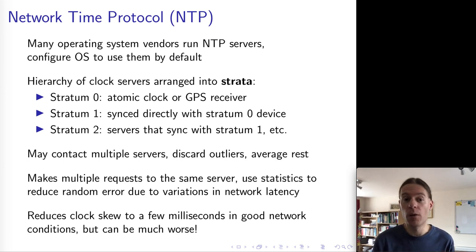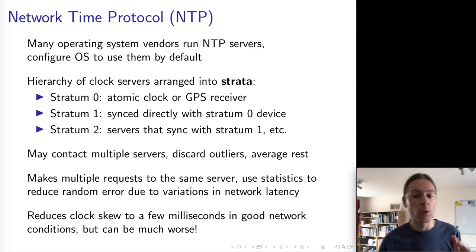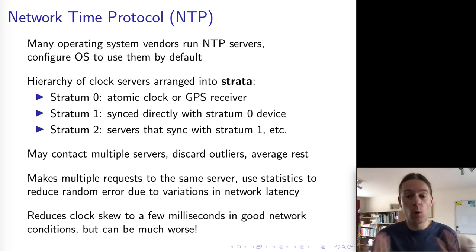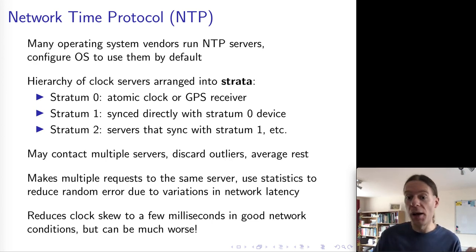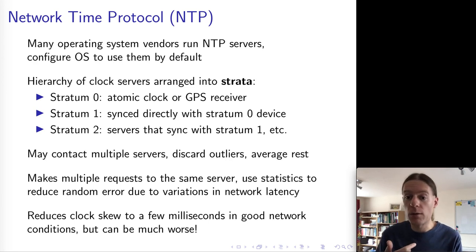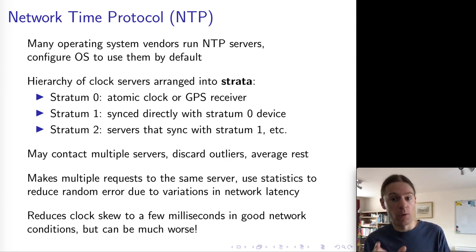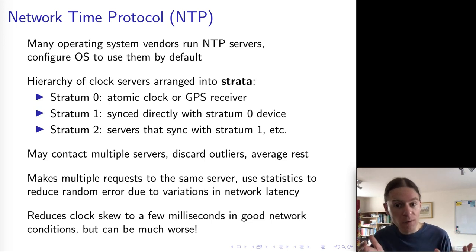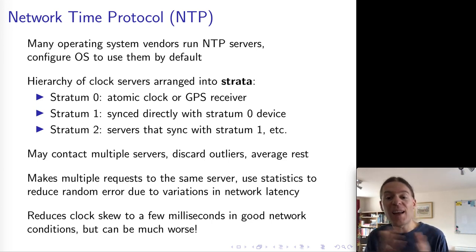One thing NTP does is query multiple servers if available, because one of those servers could be misconfigured or faulty and reporting a wildly inaccurate time. If you're querying three or five servers you can identify an outlier — if one server is way off while the others are close together, NTP can exclude that outlier. Another technique is to query a server not just once but multiple times over several minutes, so that random variations in network delay can hopefully get filtered out.